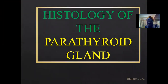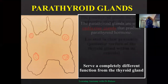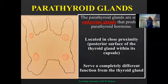Welcome. Let's look at the histology of the parathyroid gland. Before we go into this gland, let's quickly familiarize ourselves with what the parathyroid gland is. It is a small endocrine gland that produces the parathyroid hormone, known as PTH. This gland is located at the posterior surface of the thyroid gland.